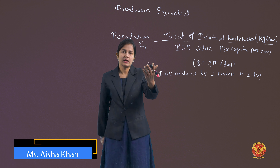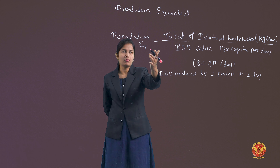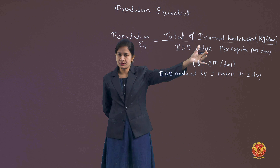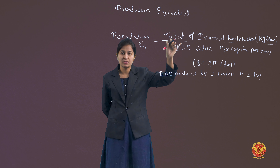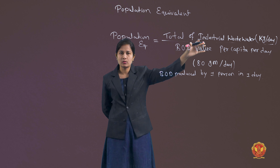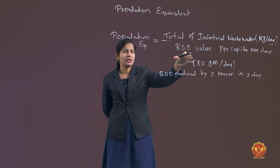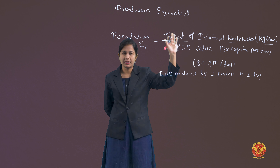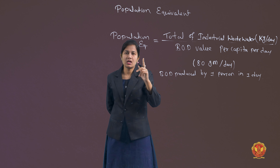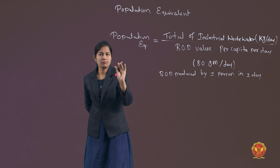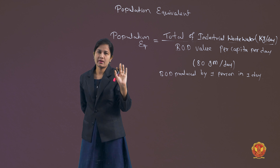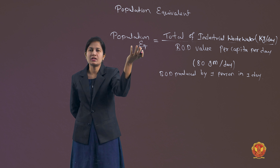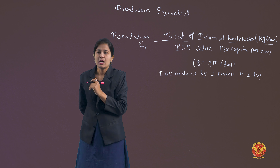In the previous video, we have seen what is the population equivalent. It is the total of industrial wastewater produced in kilograms per day, divided by the BOD value per capita per day. That is the population equivalent.